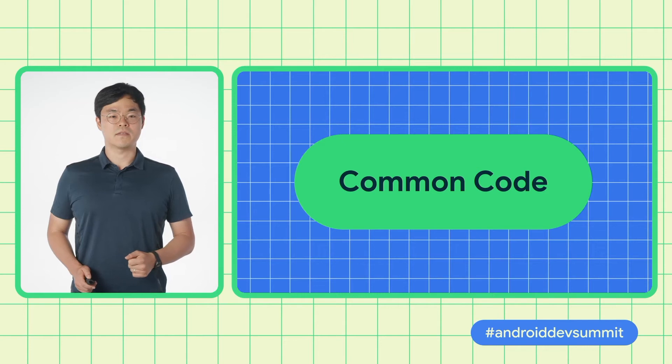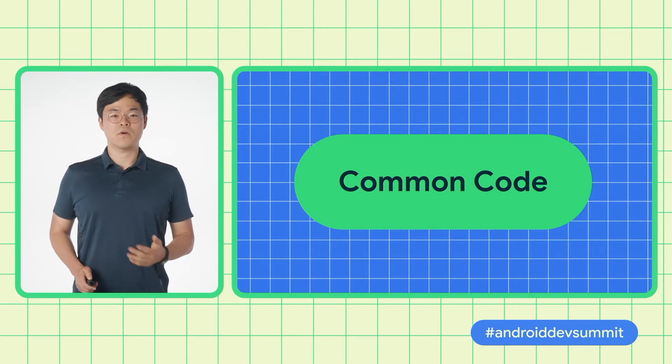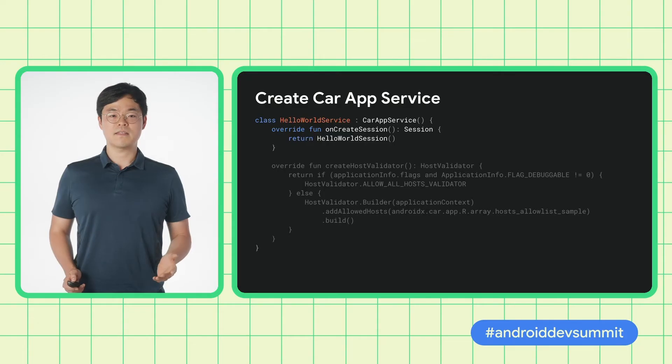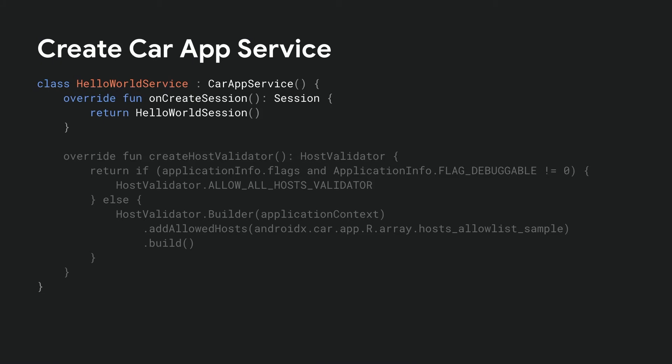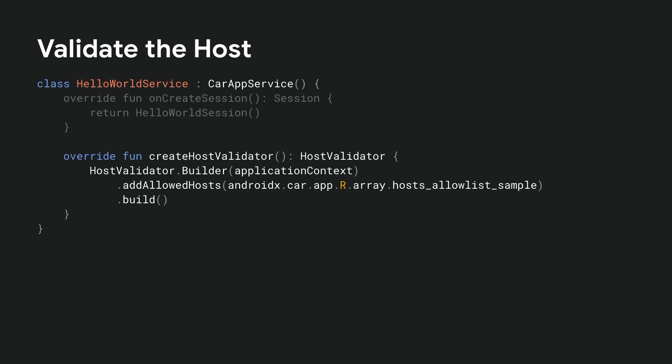After setting the dependencies, we can write the main car app logic that works in both Android Auto and Automotive OS. First, we create our car app service class. This class is the main bridge of communication between our app and the host. In the onCreateSession method, we return a HelloWorld session object, which we will go over soon. In our service, we also create a host validator to check if the host that binds to our service can be trusted. We use the default host whitelist here, but you can add new hosts if needed.